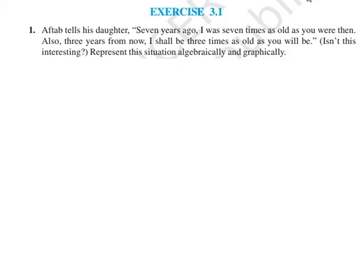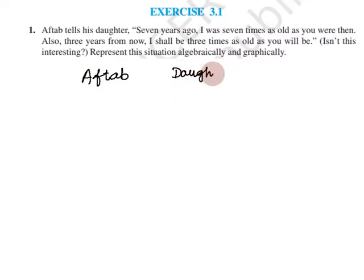So here are two age-related problems. In this question we have: 7 years ago, I was 7 times as old as you. Also, 3 years from now, I shall be 3 times as old as you will be. We need to find the algebraic and graphical representation. So here are two persons — one is the father, and the other is the daughter.